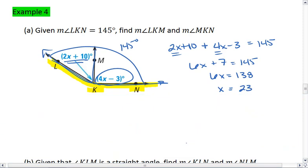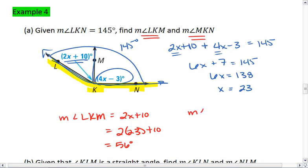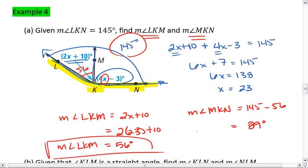But we're not done yet. The problem asks us to solve for the left and right angle, so we plug this value in. We know the measure of angle LKM equals 2X plus 10, so this equals 2 times 23 plus 10, which ends up being 56 degrees. This means that the measure of angle MKN is going to be 145 minus 56, or 89 degrees. You could have also plugged the 23 into 4X minus 3 to solve for the measure of angle MKN. Those are our two angles.